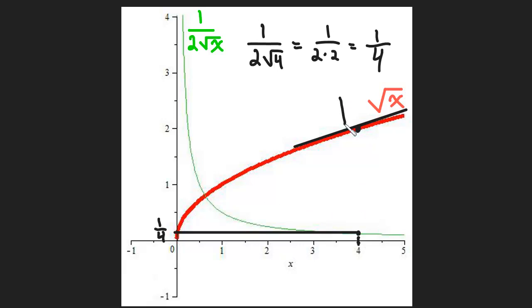So this must be one-fourth here. So the slope of the tangent line to the original function, when x is four, is one-fourth. Okay, so I hope you're seeing how this works here.